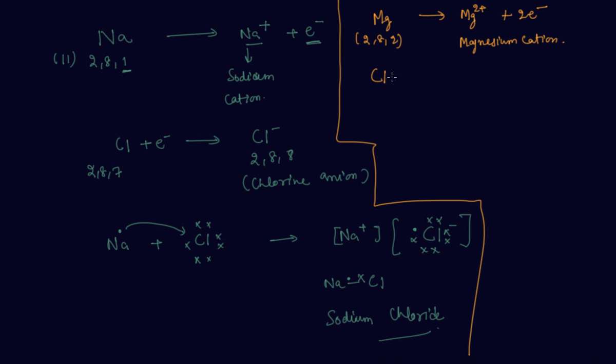Similarly, Cl gains one electron and forms Cl- ion, or you can say chloride anion. When magnesium has two electrons and there are two Cl ions,